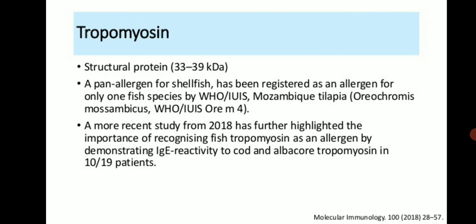Tropomyosin is a structural protein of 33 to 39 kilodaltons. It has been registered as an allergen for sailfish by the WHO/IUIS. A more recent study from 2018 further highlighted two important recognitions of fish tropomyosin as an allergen, demonstrating IgE reactivity to cod and albacore tropomyosin in 10 to 19 patient participants.